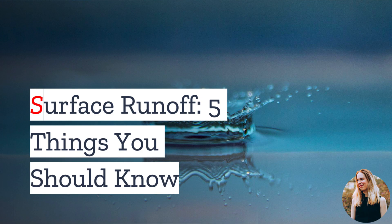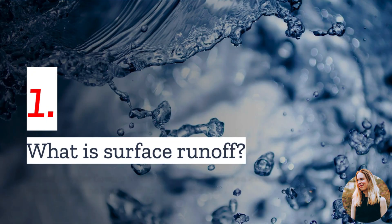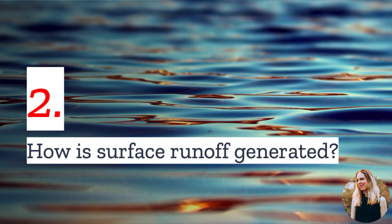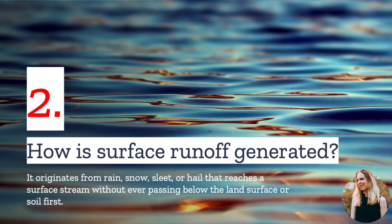If you own property, you will have to deal with surface runoff. In today's video, we have the top things you should know. Number one: what is surface runoff? Surface runoff, also known as stormwater runoff, is water flowing on the ground surface when excess rainwater, stormwater, meltwater, or other sources can no longer infiltrate into the soil. Number two: how is surface runoff generated? Surface runoff is defined as precipitation — first and foremost, it is caused when rain cannot infiltrate into the soil and must run over the surface instead.